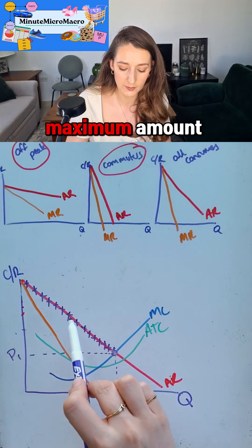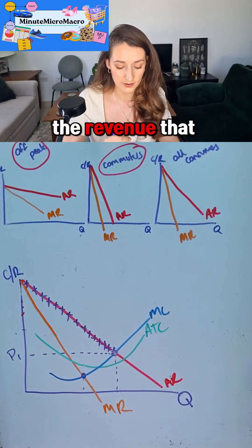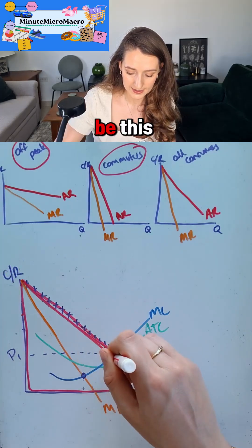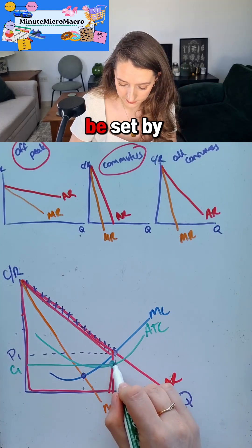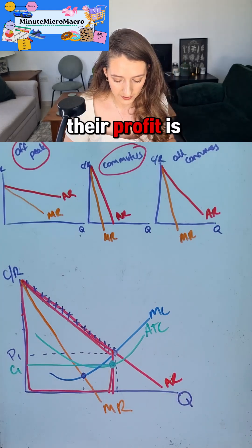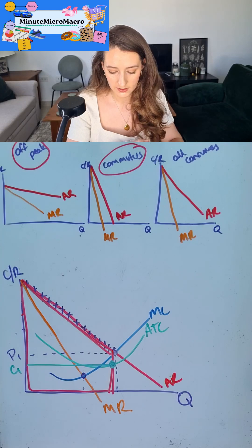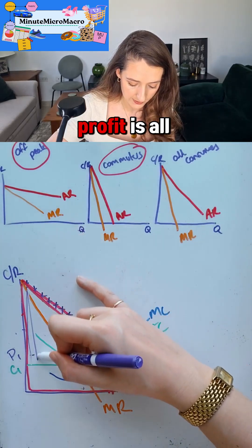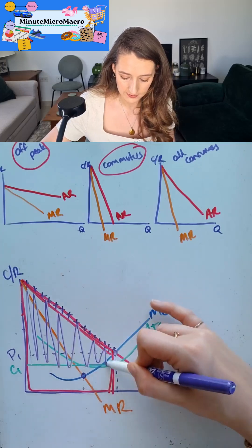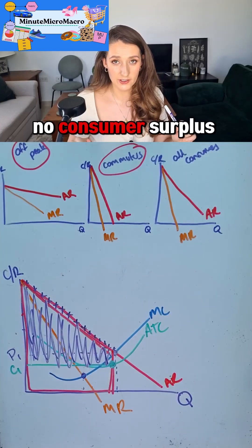Revenue that they made will be this area. The cost will be set by C1, and so their profit is the difference between their cost and their revenue. So now their profit is all of this area, and there is no consumer surplus being made.